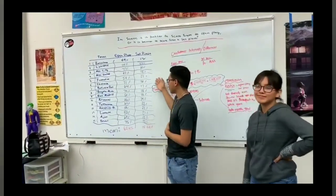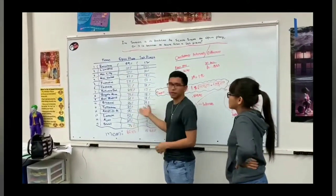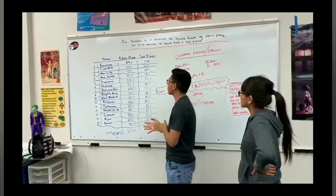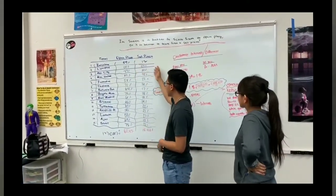Here we have our data that we gathered. We chose fifteen different teams from different leagues, and we got their percentages for each one, which is the open play and the set piece.